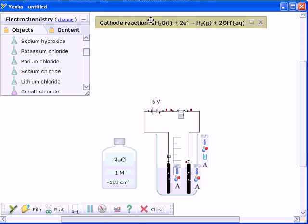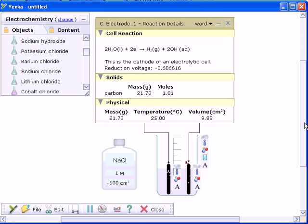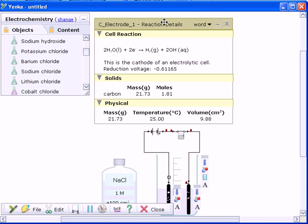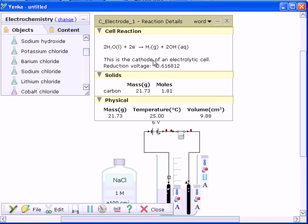Reactions taking place in your experiment can be viewed in the information window. This will tell you which electrode is the anode and which is the cathode.